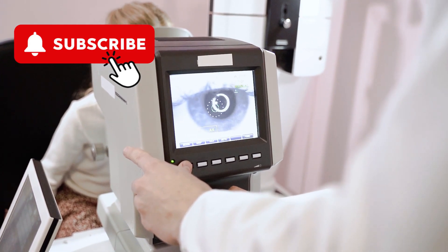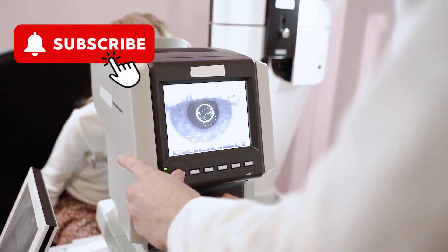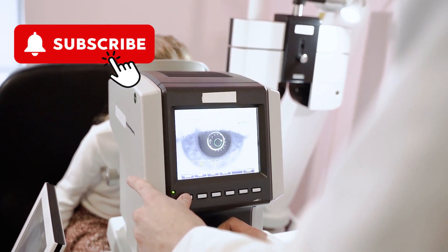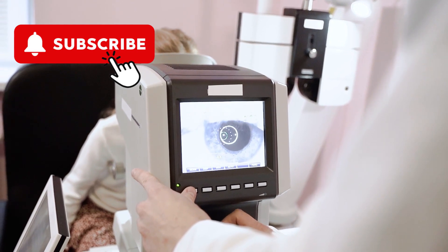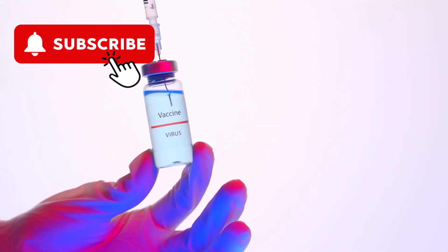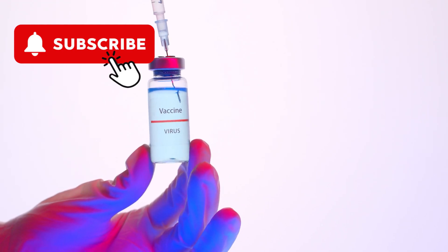Another measure of infectiousness is the secondary attack rate, which represents the proportion of exposed individuals who develop the infection. For seasonal influenza, the secondary attack rate is around 10%, implying that 1 out of every 10 susceptible individuals exposed to an influenza case will contract the infection.